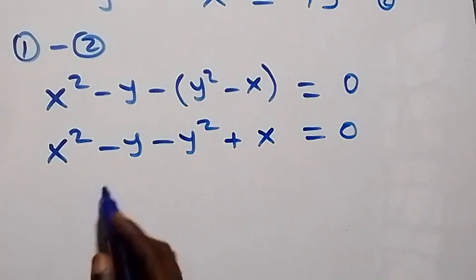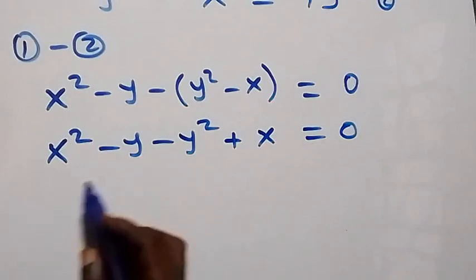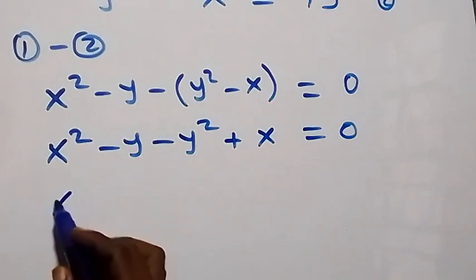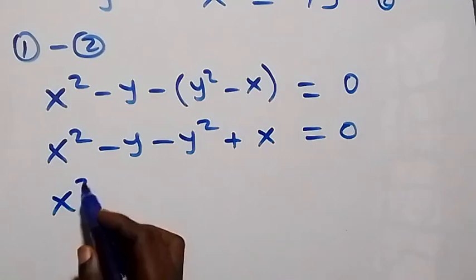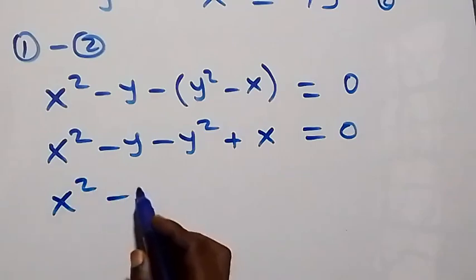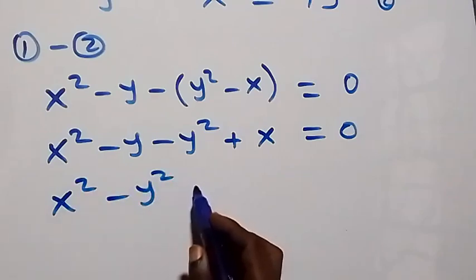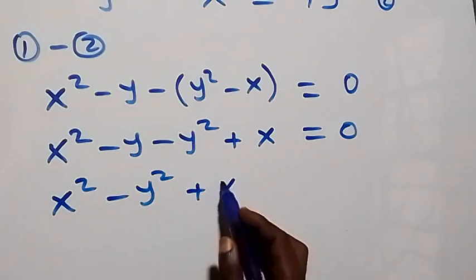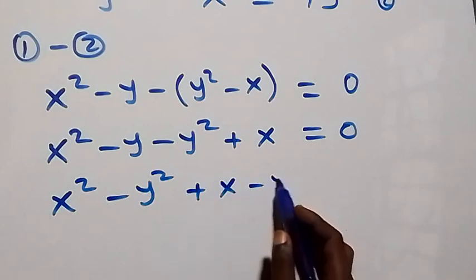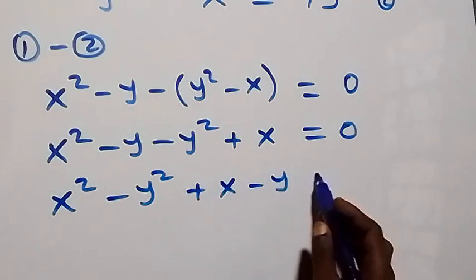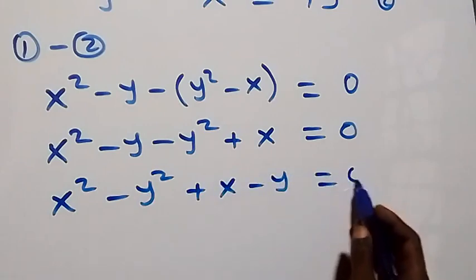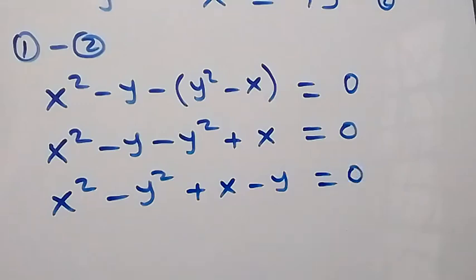And we bring the square terms together, so here we have x squared minus y squared, then plus x minus y, equals to 0.